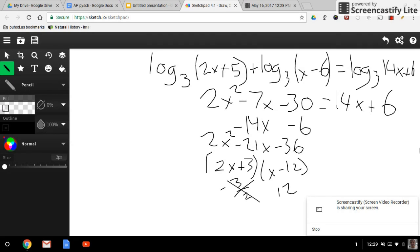We subtract 14x and minus 6 from the right side to the left side, which gives us 2x squared minus 21x minus 36. When we factor that out, we get 2x plus 3 and x minus 12. Our final products are negative 3 over 2 and 12. Plugging negative 3 over 2 back into the original equation gives us a negative number, which is not a correct answer, so 12 is the final answer.